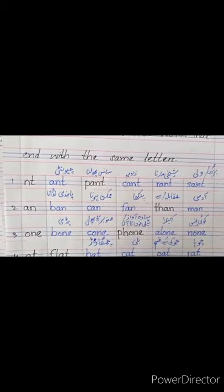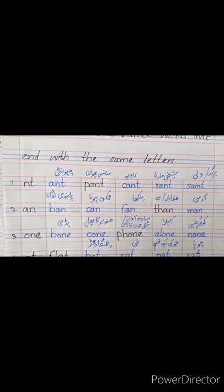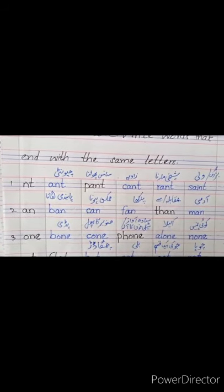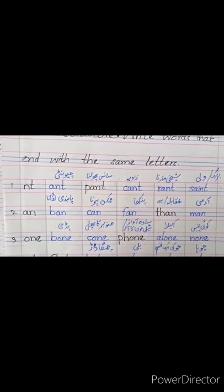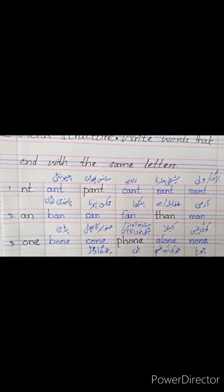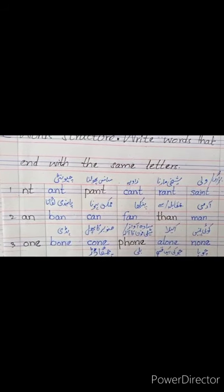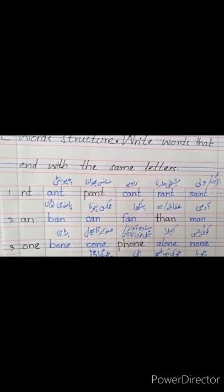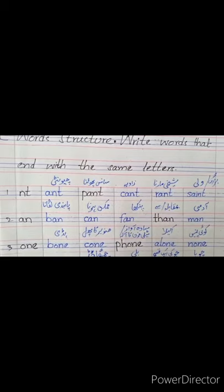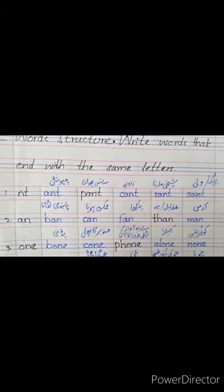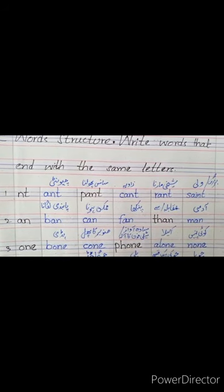So in the very first group, N, T. The very first is 'ant' — A, N, T. Look at 'ant' — the last letters are N, T. Ant means 'unity'. Second one is 'pant', given in your books.